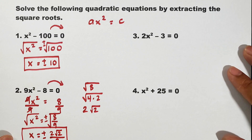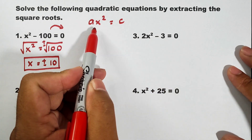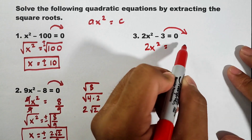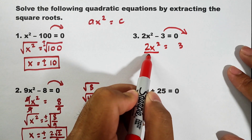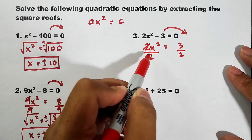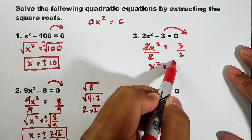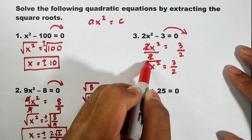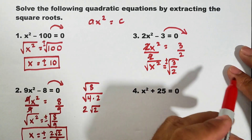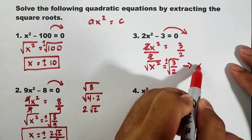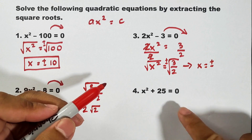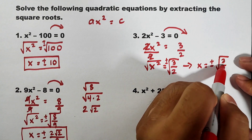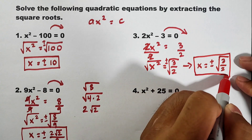Let's move on with item number 3. Following the pattern, transpose to get 2x squared = 3. Divide both sides by 2: x squared = 3/2. Extract the square root — don't forget positive and negative. The square root of x squared is x. Since we cannot simplify the fraction 3/2 further, the answer remains positive or negative square root of 3 over 2. This is the final answer and will be accepted by your teacher.